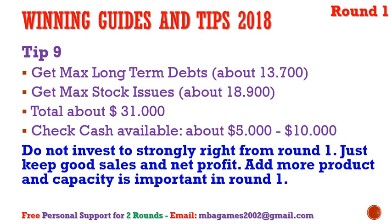Tip number nine for finance: in round one, get the maximum long-term investment of about $13 million and maximum stock issue of about $18 million, giving about $30–31 million of investment for round one. Keep cash available of about $5–10 million to avoid an emergency loan. We don't know competitors' strategies yet, so keep a safe strategy.